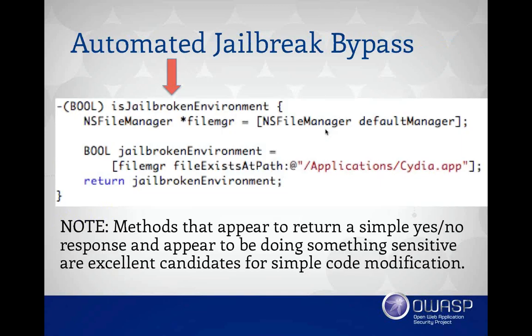Here's another one where we can look at things like: is it going to be easy to bypass your jailbreak detection algorithm? There are a number of different questions we can look at. First, you can look at the method prototype and say, is this a jailbreak detection algorithm? Is it returning a simple yes or no? If it's doing something sensitive and returning a yes or no, then as the attacker, if I can force that method to always return true or always return false regardless, this is an excellent candidate for modification. So here we can inject code or even do something as simple as method swizzling in order to bypass the jailbreak detection algorithm.